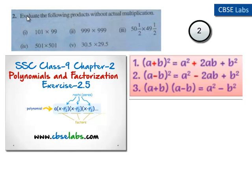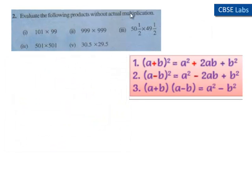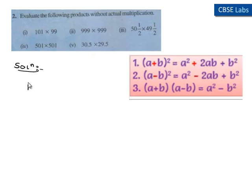Coming to the second problem, we have to evaluate the following products without actual multiplication. The first product is 101 times 99, the second one is 999 times 999, the third one is 50 and 1/2 times 49 and 1/2, the fourth one is 501 times 501, and the fifth one is 30.5 times 29.5. Coming to the solution: